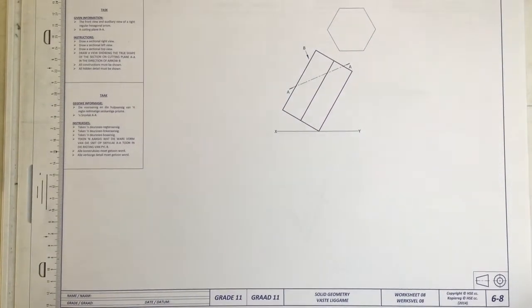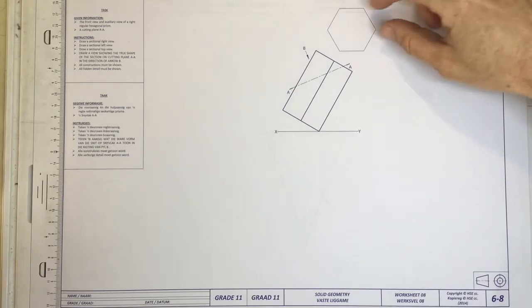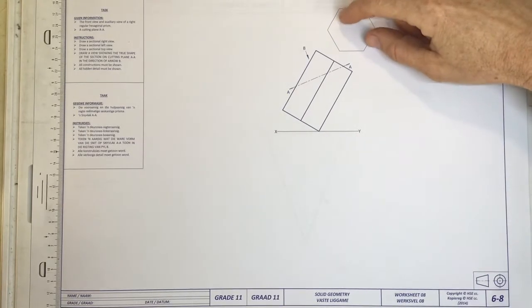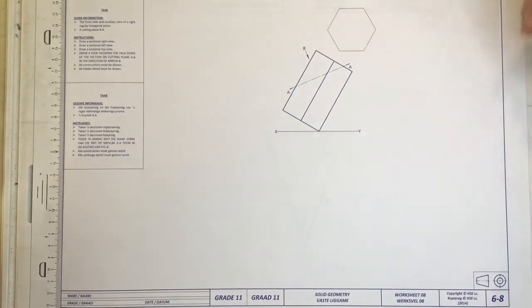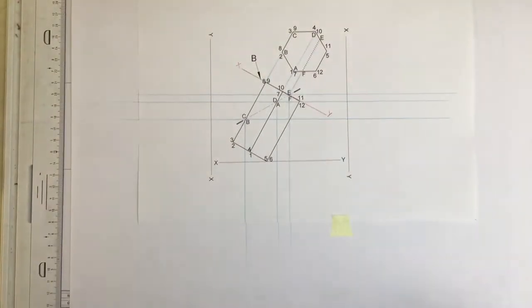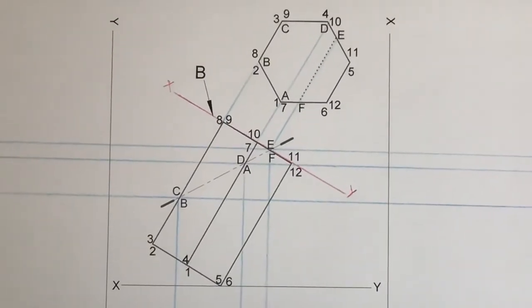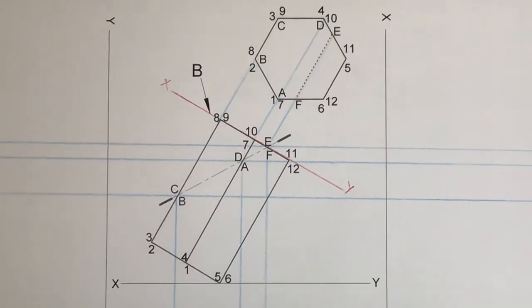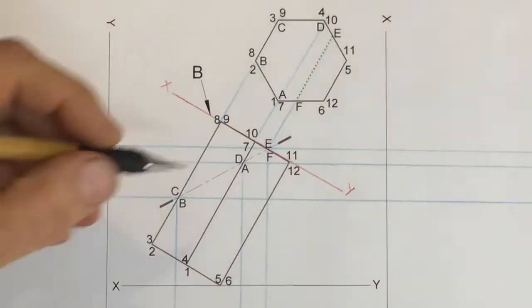Okay, today we're going to be doing solid geometry 6H in the HSE textbook. They've given you an auxiliary view of this hexagonal prism and the first thing that we need to do is obviously to number it. I'm just going to flap that over so you guys can see these numbers. I'm just going to zoom in so you can see those numbers and I would suggest that you try and get those numbers exactly like this just to help you through getting this stuff right.